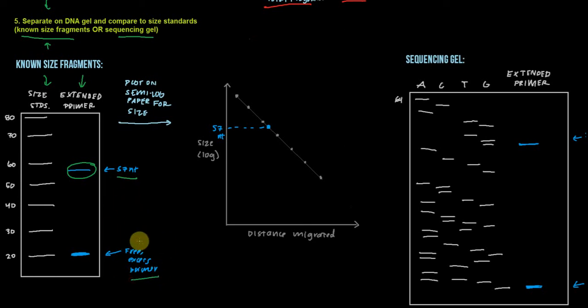And then here at the bottom is our free excess primer. We're going to pretend like our primer is 20 nucleotides long, and that's something that you'd know because you made the primer. So here we go, we've got a big band here that shows the free excess primer, a primer that didn't anneal to any of our RNA. But remember, it was still radiolabeled. So that's the first way that we can analyze the size of our fragment.